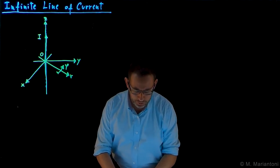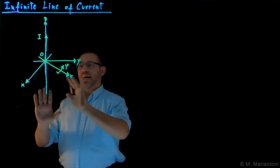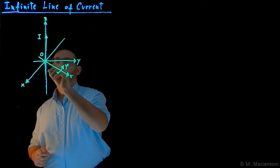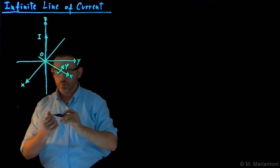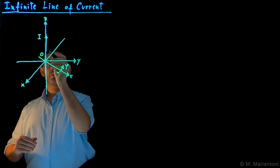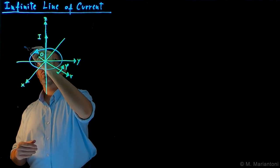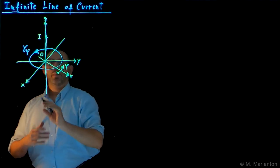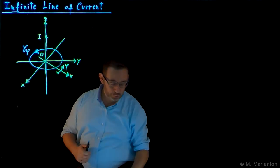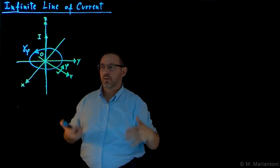Eventually, in this problem, we are going to need to define a closed line linked with this current distribution, which will reside on the x-y plane — the plane normal to z. In this plane we have an oriented line, counterclockwise, which is the most common orientation. We call it gamma bar phi, because it follows the phi direction. This closed line is linked with the current distribution because the current crosses the surface associated with this line at exactly one point, which is O.